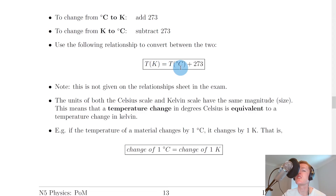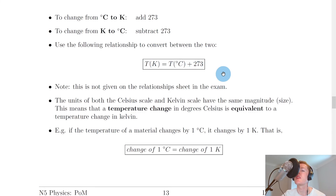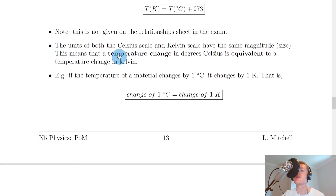To find the temperature in Kelvin: T(K) = T(°C) + 273. To find the temperature in degrees Celsius: T(°C) = T(K) − 273. Note that this formula is not given on the relationship sheet in the exam — it's a general formula worth remembering.